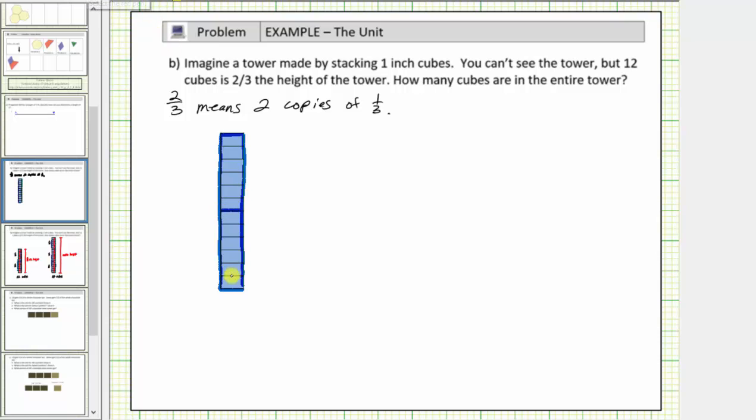Notice each part has one, two, three, four, five, six cubes. Where again each part is one-third of the height of the entire tower. So now we know one-third of the height of the entire tower is six cubes.